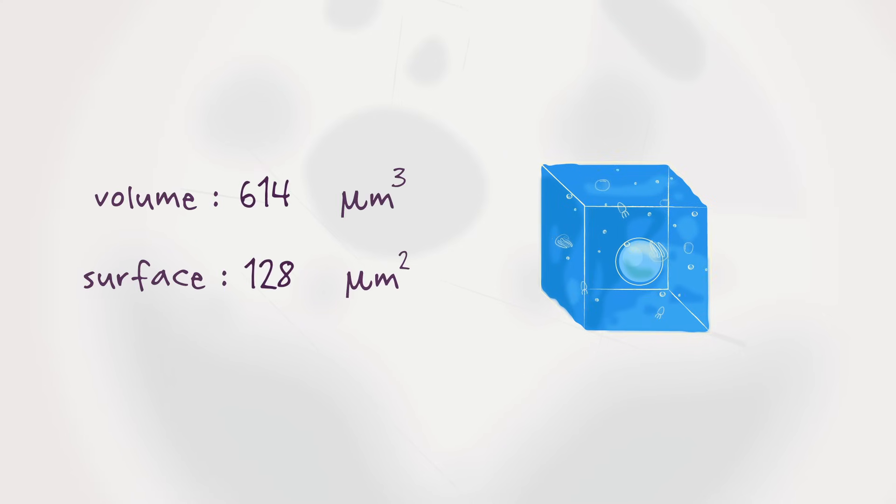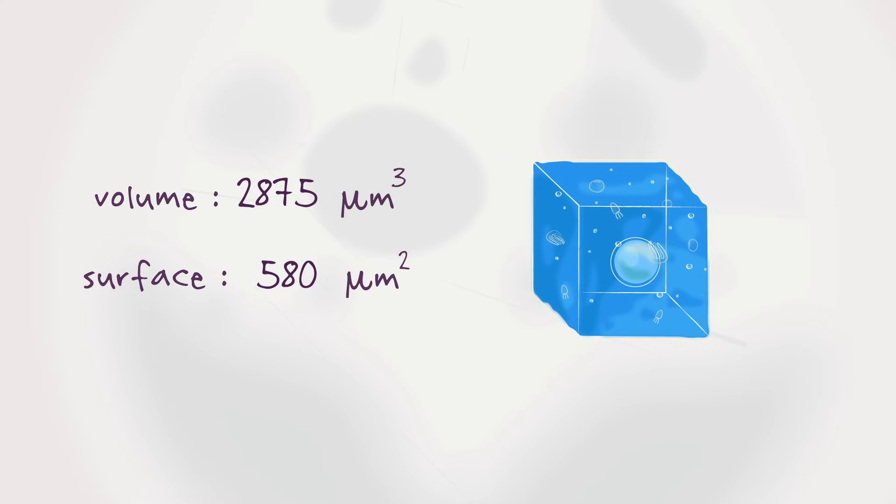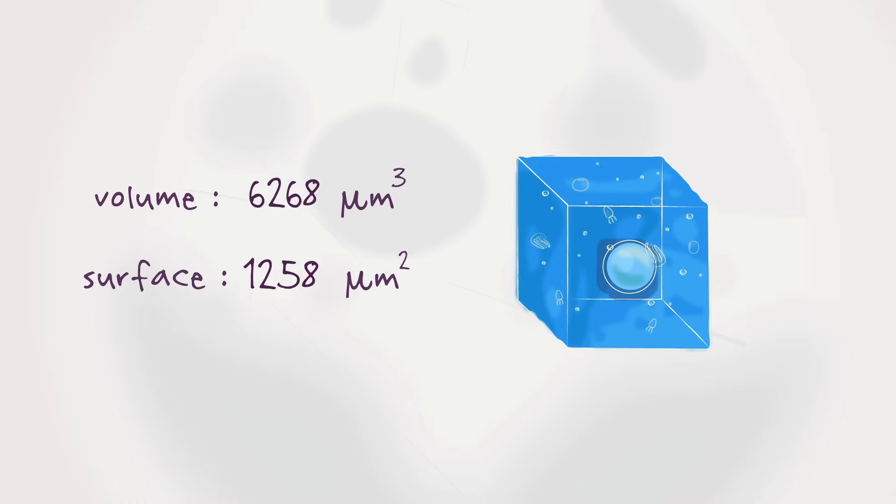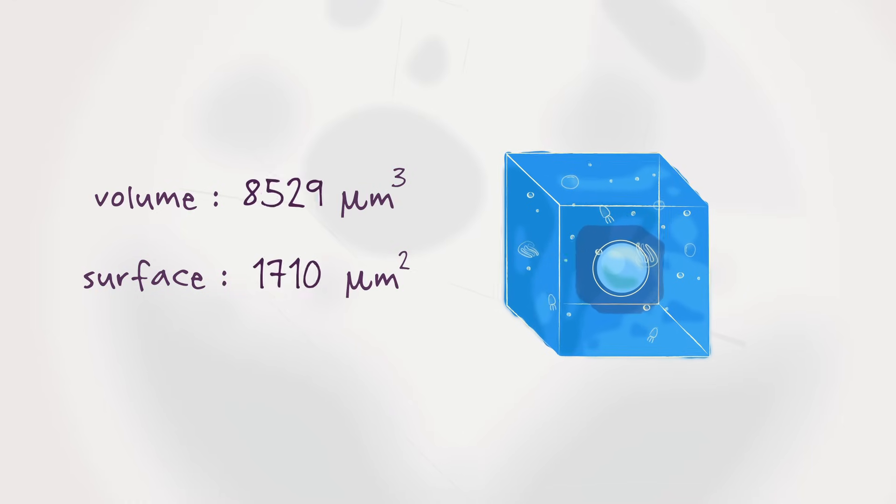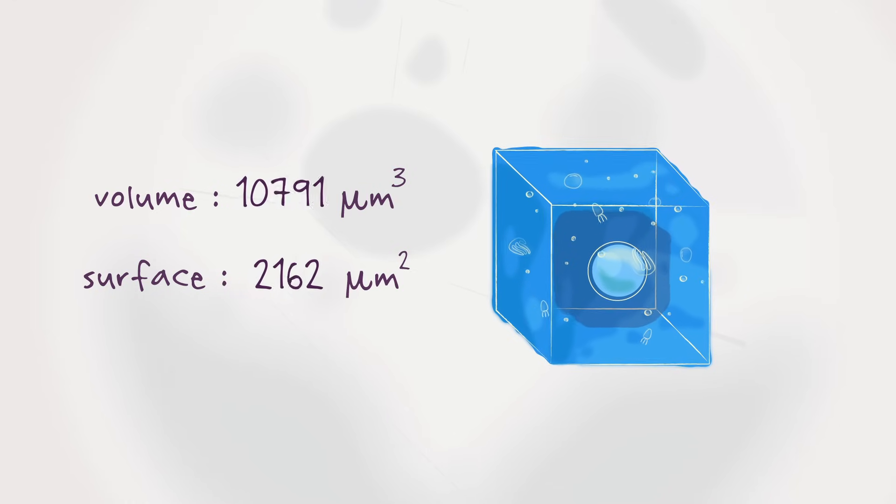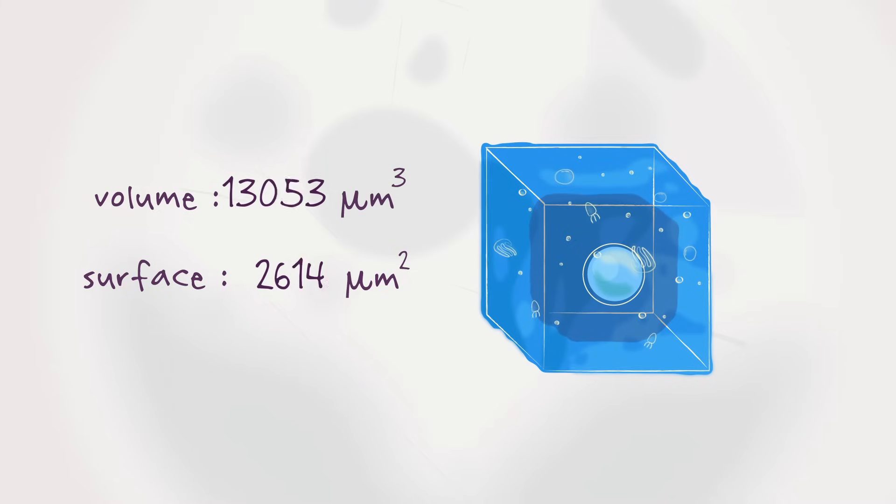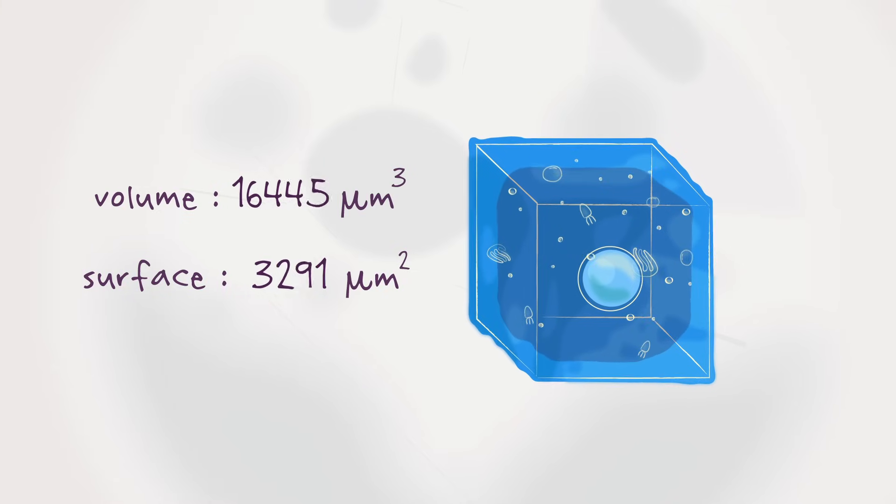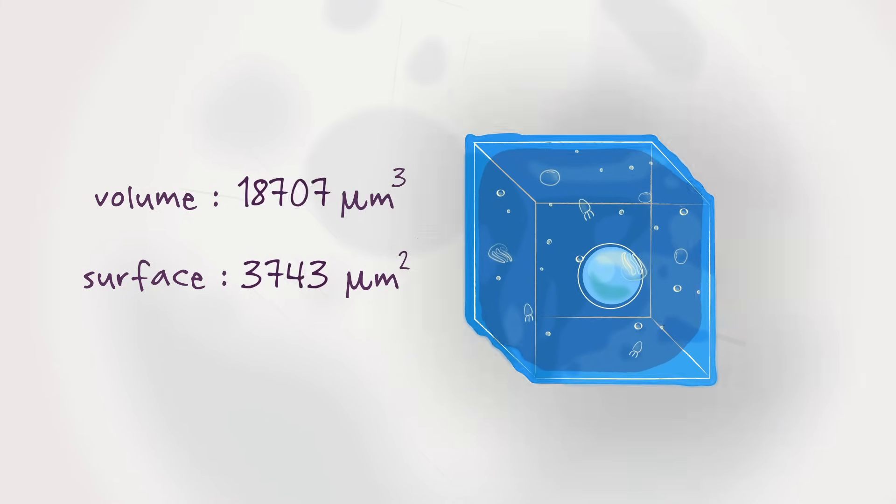As the cube grows, its volume increases much faster than its surface area. The interior would overtake the membrane, leaving too little surface area for things to quickly move in and out of the cell. A huge cell would back up with waste and eventually die and disintegrate.